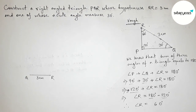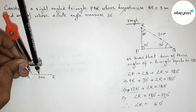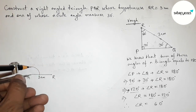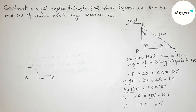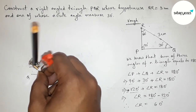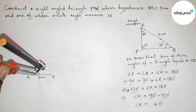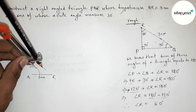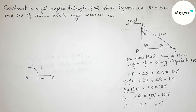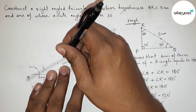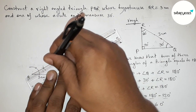Angle Q equals 30 degrees, so we draw a 30-degree angle at point Q using a compass. Placing the compass on point Q and taking any length, we draw an arc. Then placing the compass at the arc intersection with the same length, we cut another arc. Again with the same length, we mark another point and join the line to get a 30-degree angle at Q.